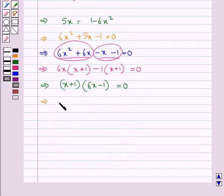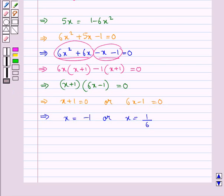That is x plus 1 equal to 0, or 6x minus 1 is equal to 0, which means we have x equal to minus 1 or x equal to 1 upon 6. So these are the two possible values for x.